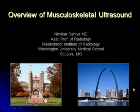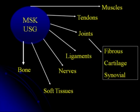Today we are going to talk about an overview of musculoskeletal ultrasound. As musculoskeletal ultrasound has gained more acceptance in the community, it's important to understand what are the main areas we can focus on. Generally, you can pretty much look at everything, but the focus usually is on muscles, tendons, joints, ligaments, nerves, soft tissues, and bone.